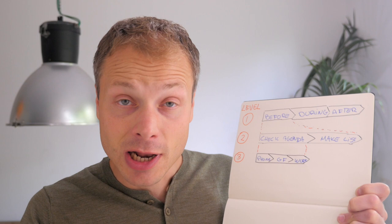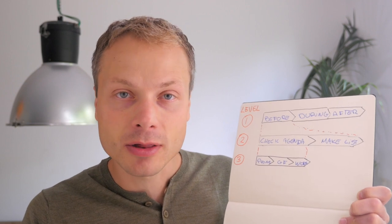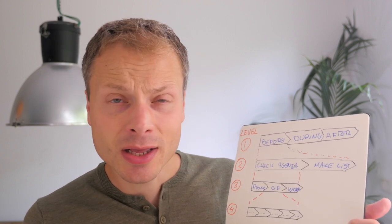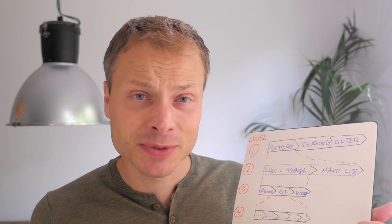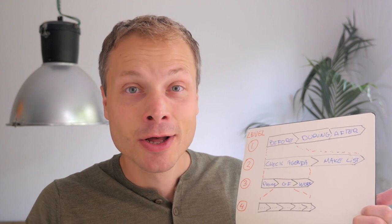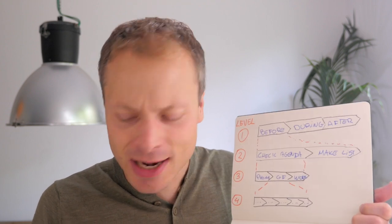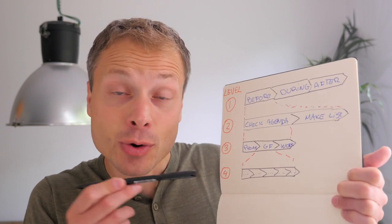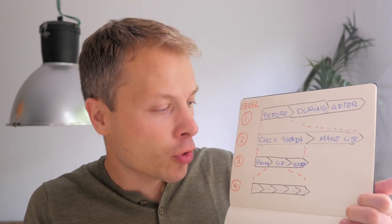The final detail level is level four, which breaks down level three even further. For instance, checking the schedule with your girlfriend might involve a few steps like texting her on WhatsApp or checking a shared Google calendar. That is what you create at a level four detail.